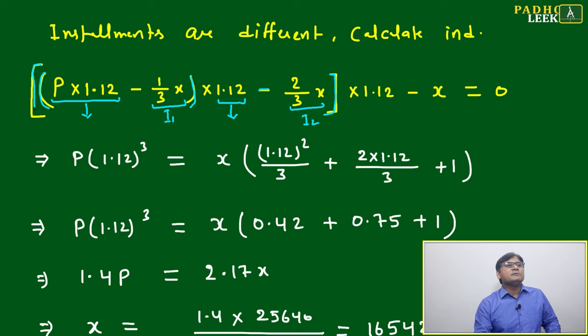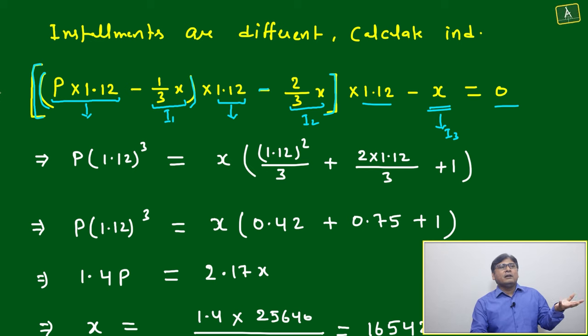That has become the principal amount for your third year. That much amount is left out after paying the second installment. Again, one year 1.12 means second to third year, and afterwards you are paying the amount X, that is your third installment. This should be equal to zero because you have paid the total amount. Whatever interest you got, you have given installment, again interest you got, given the installment, and finally you paid the entire amount. So it's equal to zero.